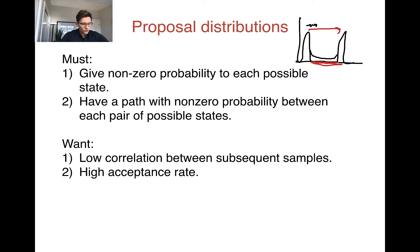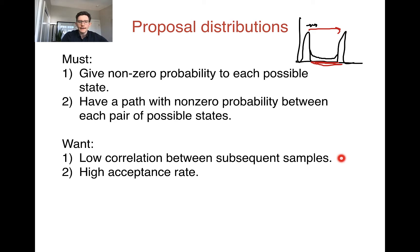So that's what must be the case for a proposal distribution. In general, for a proposal distribution to work well — that is, for it to mix quickly — after not too many samples we want a few things to hold. One is that we want reasonably low correlation between subsequent samples. If we choose proposals that take us only a very small distance in state space, it's going to take many, many samples before we explore anything else.